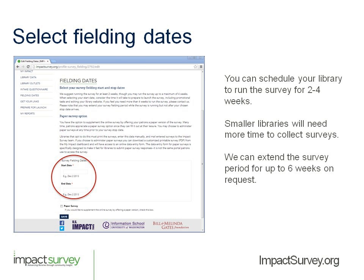When you are all done, you can begin to get ready for the survey by selecting dates that you want to field the survey in your library. We recommend you run the survey for around 2 to 3 weeks for an average-size community of around 150,000 or better. Smaller libraries in small communities need to run the survey longer in order to get a good response rate, so we recommend small libraries start out at 4 weeks. If they are still not satisfied with their results, we can extend up to 6 weeks for them.